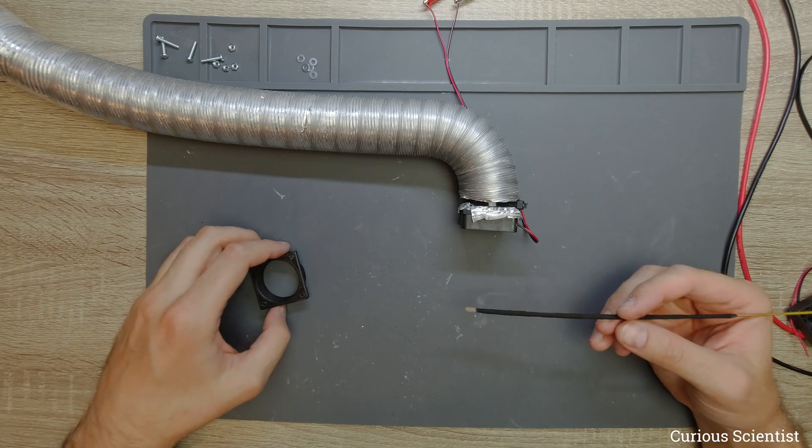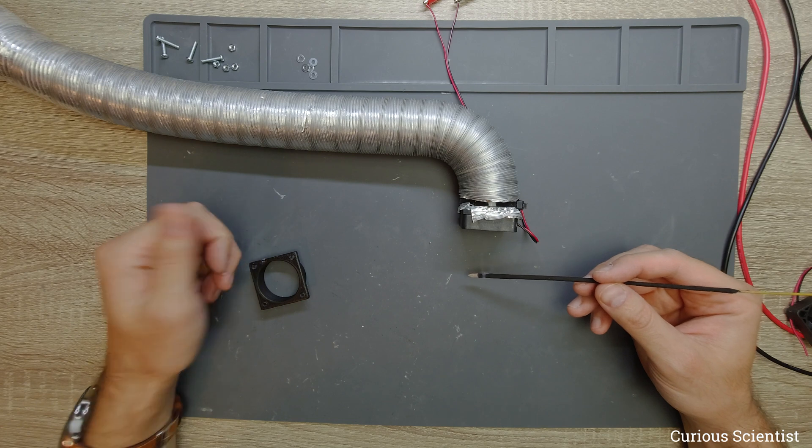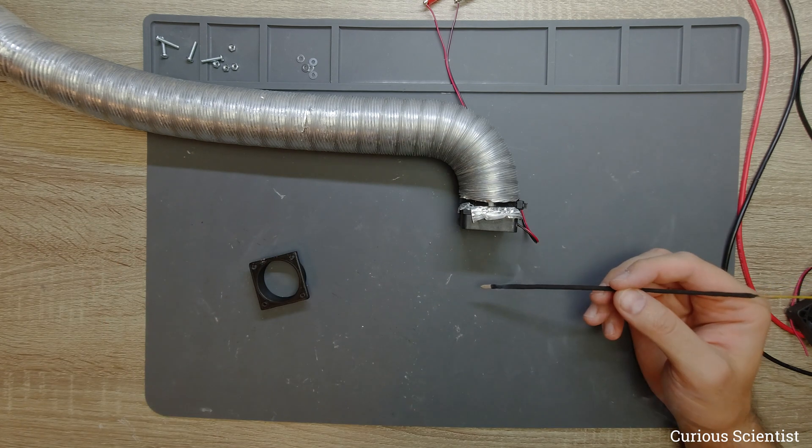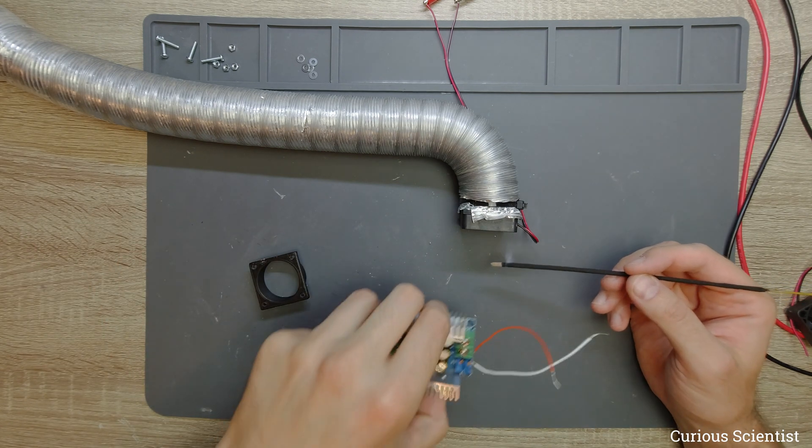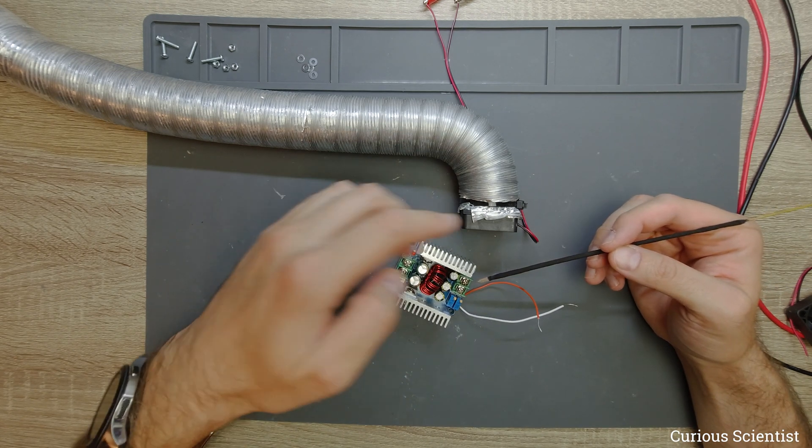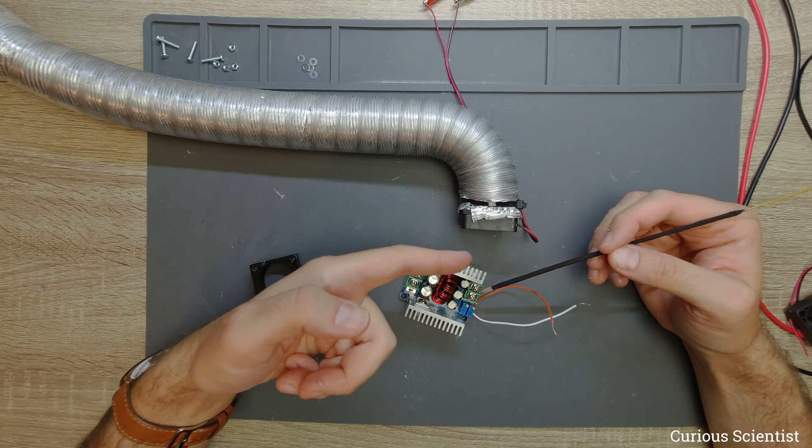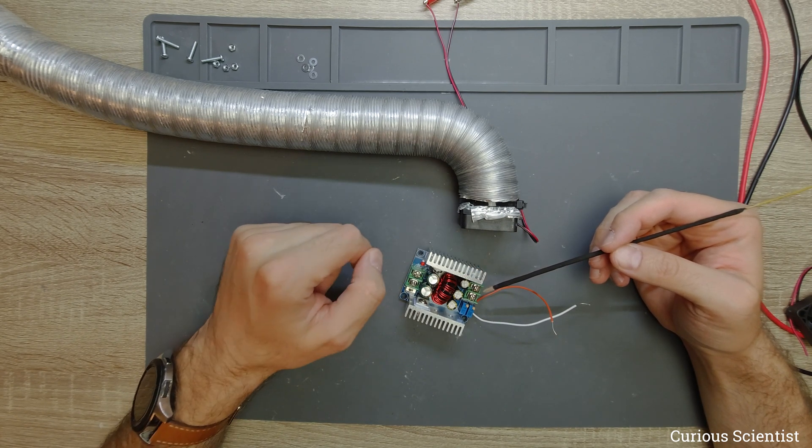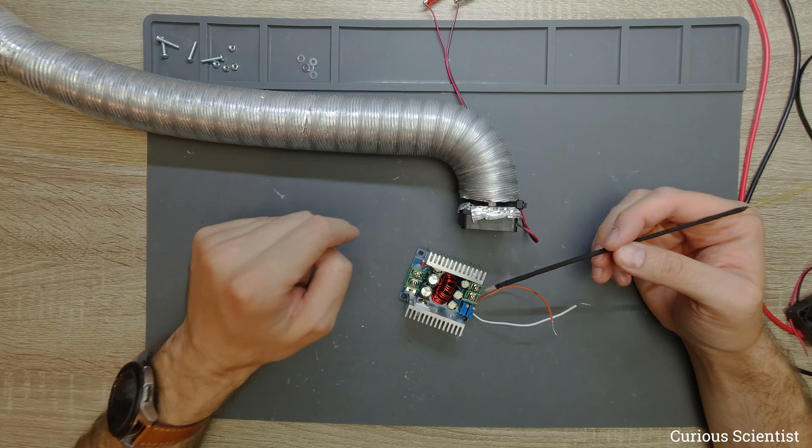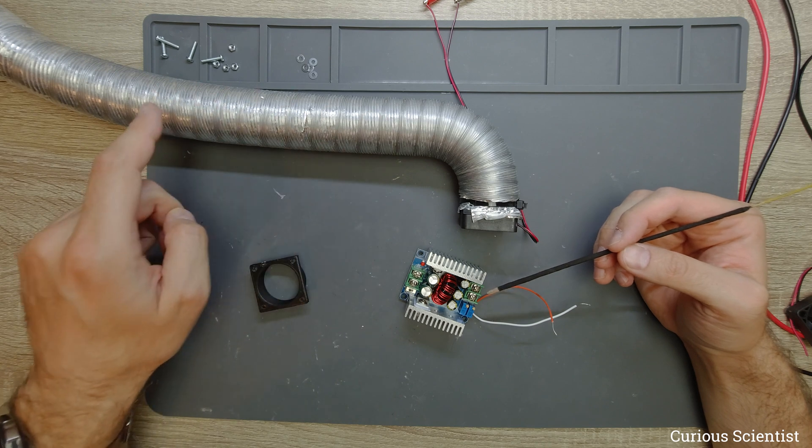As you can see, if I hold this as it would be a soldering iron and I solder something here, like this circuit, I still have space and most of the smoke ends up in the tube instead of my lungs. So this is very good and this is very cheap.